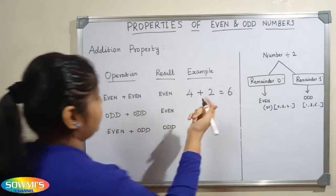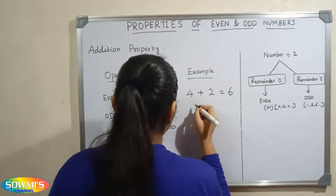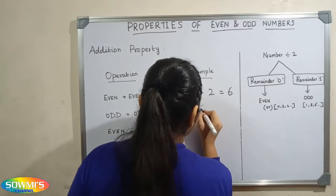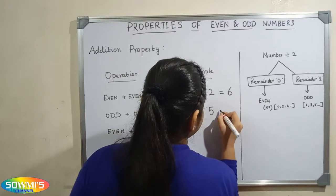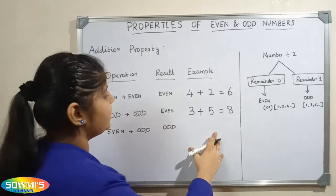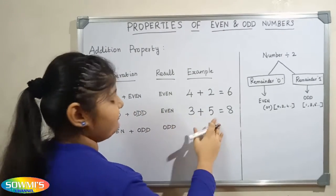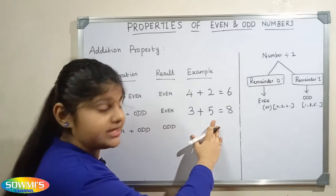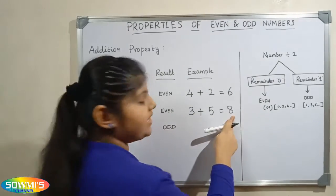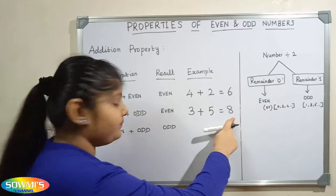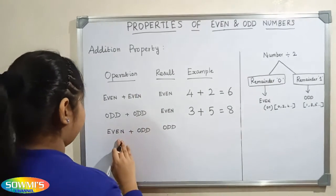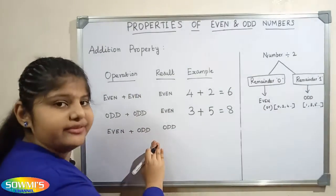When we add two odd numbers, we will get the result as an even number. For example, 3 plus 5 is equal to 8. Here 3 and 5 are the two odd numbers. When we add 3 and 5 we get 8, which is an even number.